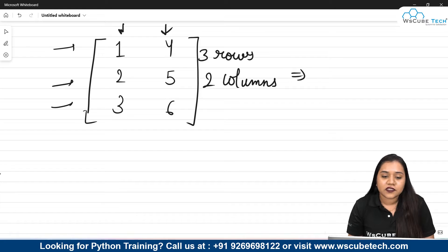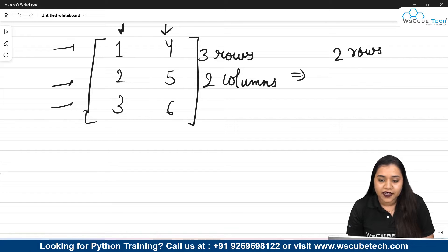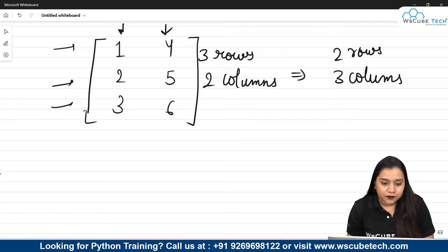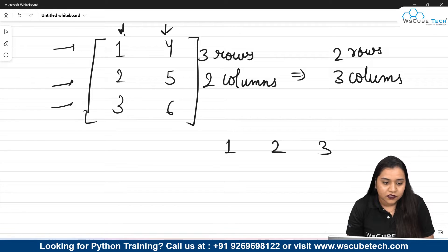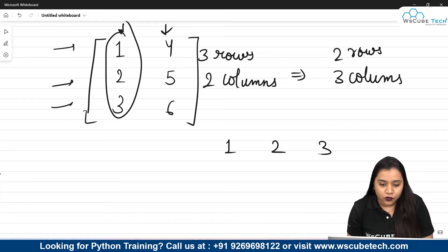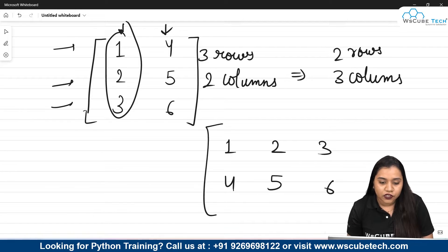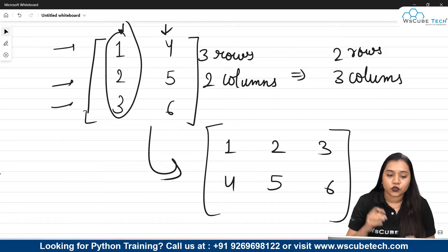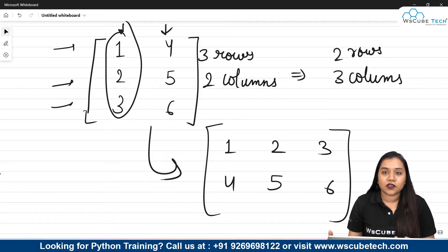Now transpose means that these 3 rows will get converted into 2 rows, and these 2 columns will get converted into 3 columns. So we'll get 1, 2, 3 — that means this whole column will get converted into a row. And another row would be 4, 5 and 6. This is how the new matrix will be obtained — the rows get converted into columns and the columns get converted into rows.